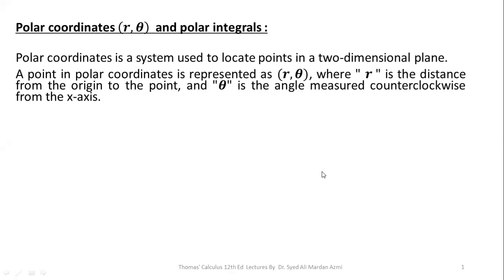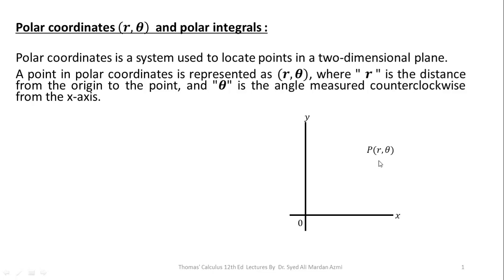First of all, what is a polar coordinate system? A polar coordinate system is a system which can be used to locate a point in a two-dimensional plane. A point in a polar coordinate system is represented by R and theta, where R is the distance of the point from the origin and theta is the angle measured in the counterclockwise direction from the positive x-axis.